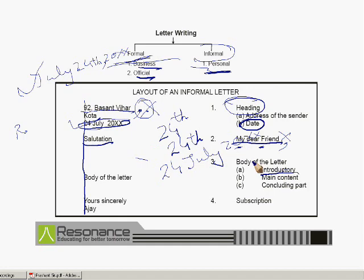From the second paragraph we come to the main content. In the main content, tell first what has prompted you to be a doctor and why you want to be a doctor. Second, what efforts you will put in to be a doctor. And third — the concluding part — how you will end your letter. We will check these things with examples later on.